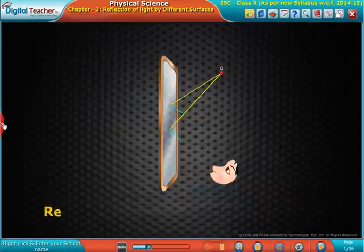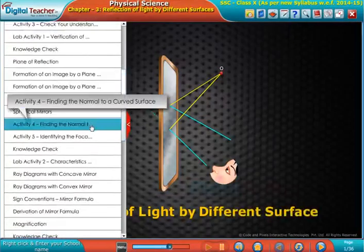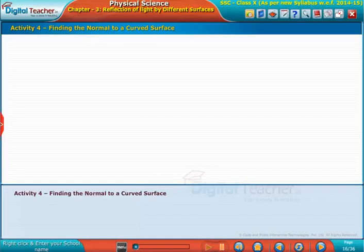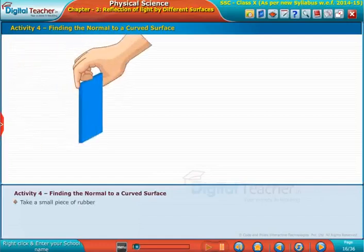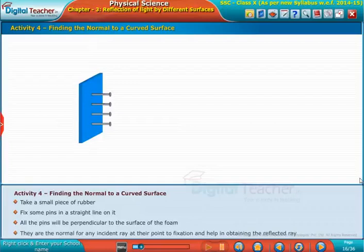Welcome to the chapter on reflection of light by different surfaces. Activity 4: Finding the normal to a curved surface. Take a small piece of rubber and fix some pins in a straight line on it. All the pins will be perpendicular to the surface of the foam. They are the normal for any incident ray at their point of fixation.